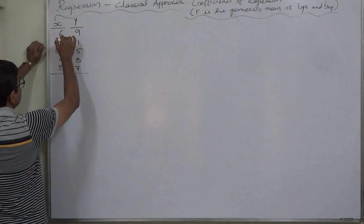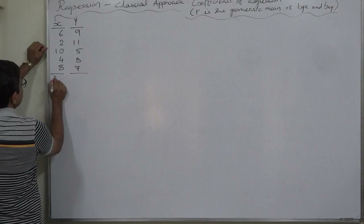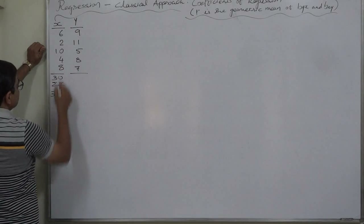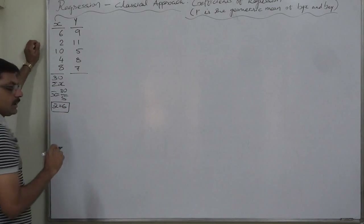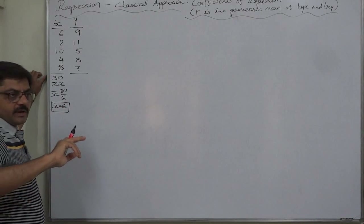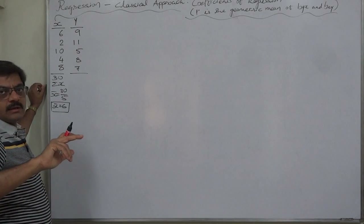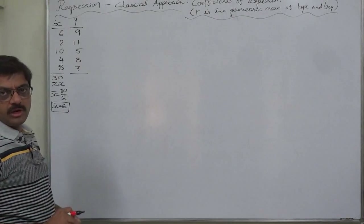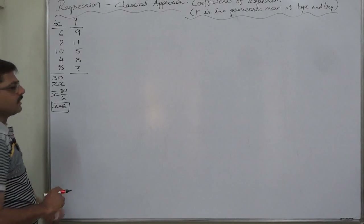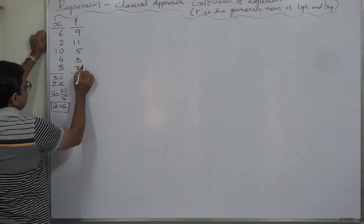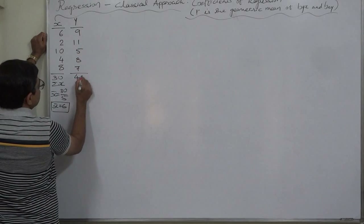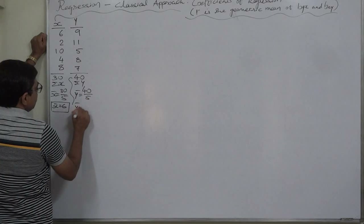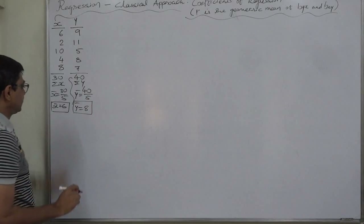Let us find the summations. Adding the x values: 6 + 2 + 10 + 4 + 8 = 30, so sigma x is 30 and x-bar is 30 divided by n=5, giving x-bar = 6. For y: 9 + 11 + 5 + 8 + 7 = 40, so sigma y is 40 and y-bar is 40 divided by 5, giving y-bar = 8. The mean of x is 6 and the mean of y is 8 — both are integers.